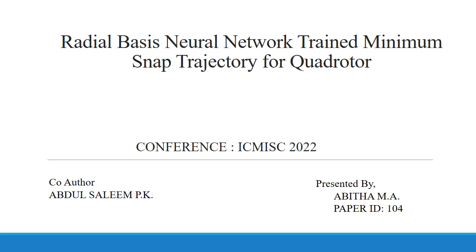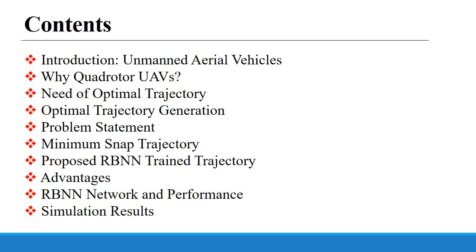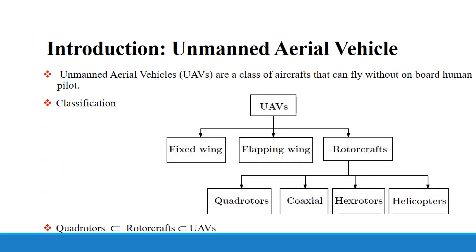Welcome everyone. I am Abhida, presenting the paper regarding the radial basis neural network trained minimum snap trajectory for quadrotors. The contents include: introduction, unmanned aerial vehicles, why we are going for quadrotor unmanned aircraft, the need for optimal trajectory generation, optimal trajectory generation method, problem statement, minimum snap trajectory, the proposed radial basis neural network trained trajectory, advantages of radial basis neural network, and performance simulation results.